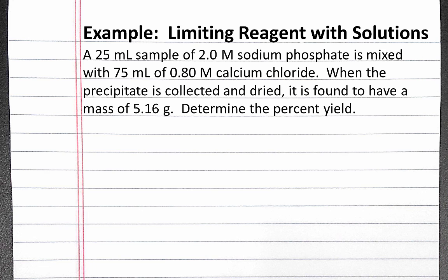In this example, we'll solve a limiting reagent problem dealing with solutions. Our problem reads: a 25 milliliter sample of 2 molar sodium phosphate is mixed with 75 milliliters of 0.8 molar calcium chloride. When the precipitate is collected and dried, it is found to have a mass of 5.16 grams. Determine the percent yield.